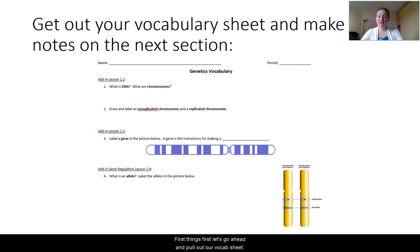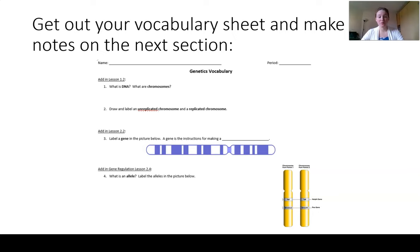First things first, let's go ahead and pull out our vocab sheets. We're going to make some notes in the next section where it says 'Add in gene regulation lesson 2.4: What is an allele?' and label the alleles below.